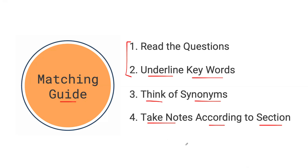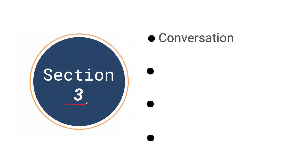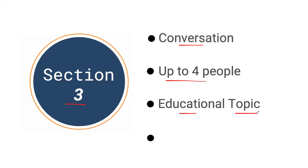We go over all of this in our introduction video. For now, this question type today will be in section three. In section three, we're going to be listening to a conversation with up to four people — this doesn't mean you'll always hear four people, just that the maximum could be four. They'll be speaking about an educational topic, such as a university talk or a conversation with a career counselor. In order to understand what each person is saying and keep details clear, it's best to use a chart system.